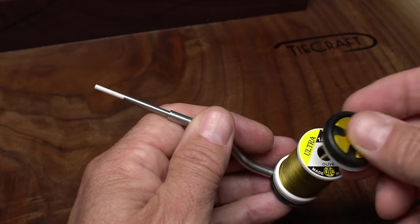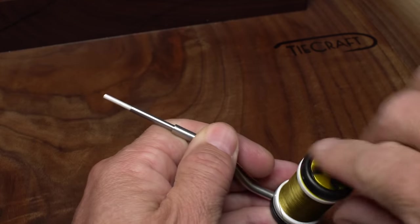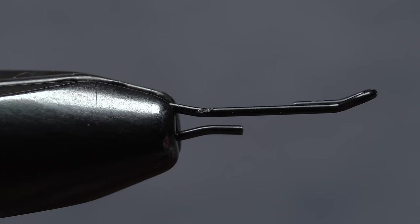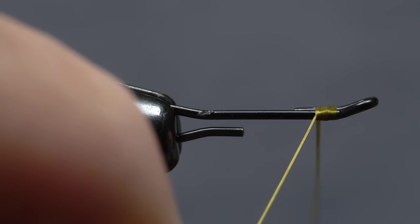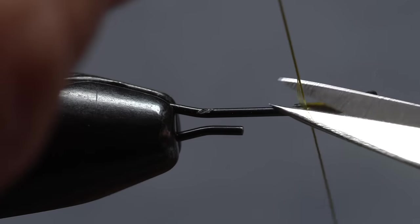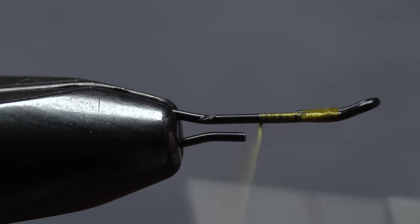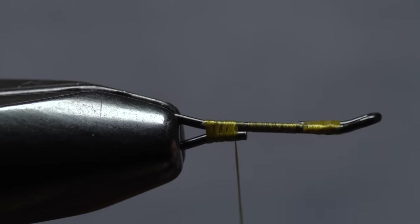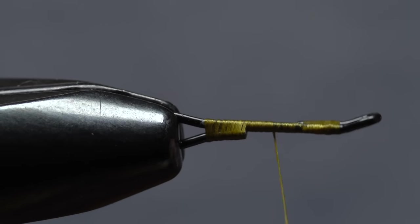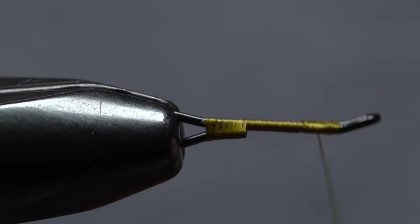For thread, I've loaded a bobbin with a spool of Olive UTC 140 denier. Get the thread started on the shank immediately behind the eye and take a few wraps rearward before snipping off the tag. Continue taking thread wraps to close the front return, then wrap rearward and close the return at the back of the shank. End with your tying thread half an eye length behind the eye.